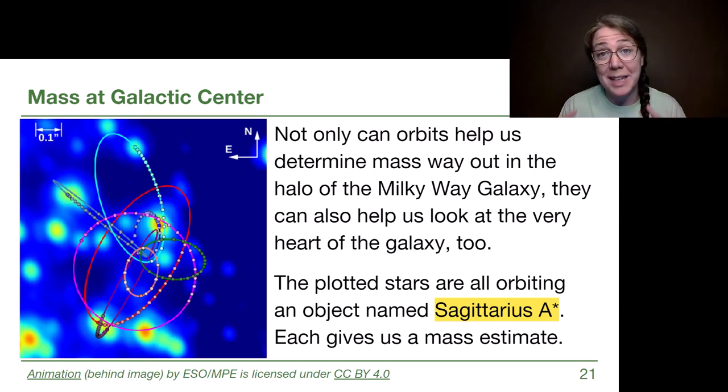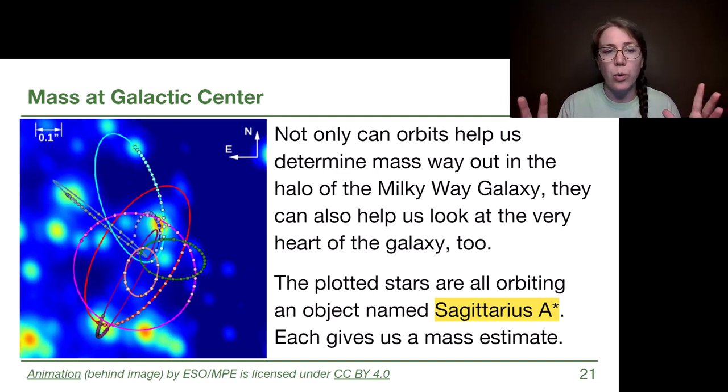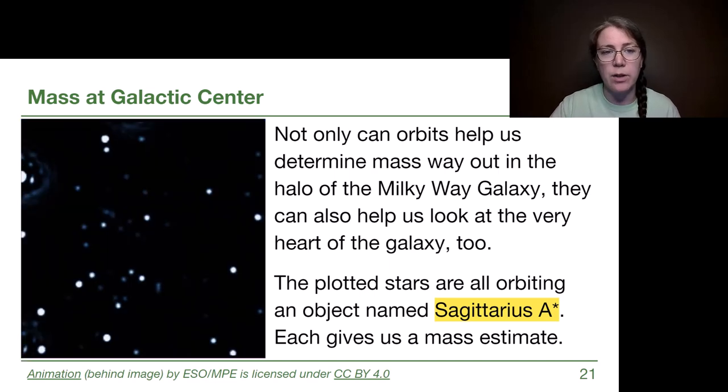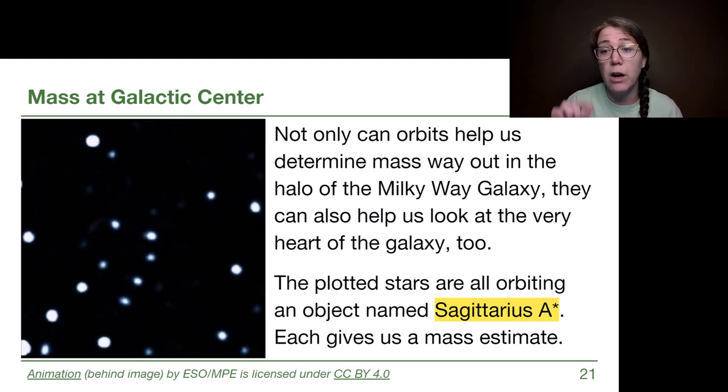At the smallest scales within the galaxy, we can also use orbits to give us mass estimates. When we look at the very center of the central bulge of the Milky Way galaxy, there are stars and gas clouds that seem to be orbiting this kind of hidden object at the very middle. We have called this object Sagittarius A* because it is in the direction of the constellation Sagittarius, and we track over time the different objects that seem to be orbiting it. Each one of these is an elliptical orbit where Sagittarius A* is at one of the two focus points.